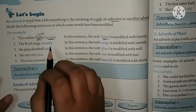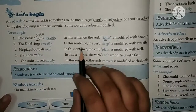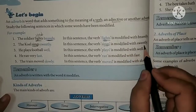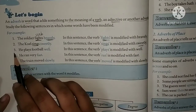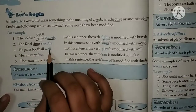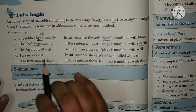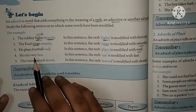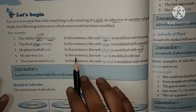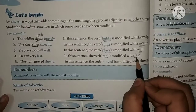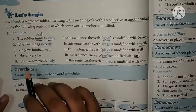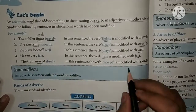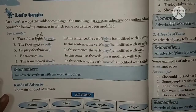Second: 'The cuckoo sings sweetly.' The verb is 'sings' — the action — and it is modified with 'sweetly'. Third: 'He plays football well.' The verb 'plays' is modified with 'well'. Fourth: 'He runs very fast.' The verb 'ran' is modified with 'fast'. Fifth: 'The train moved slowly.' The verb 'moved' is modified with 'slowly'.